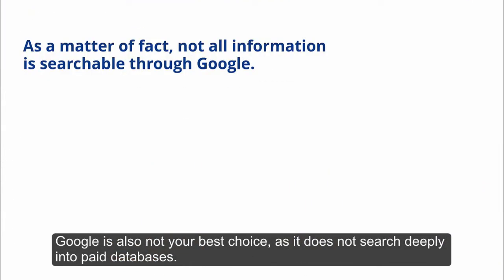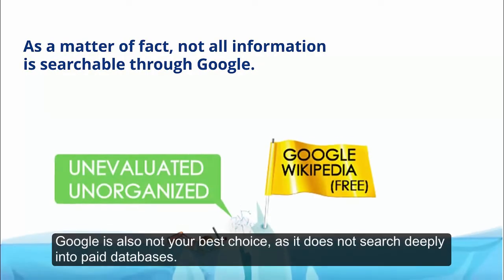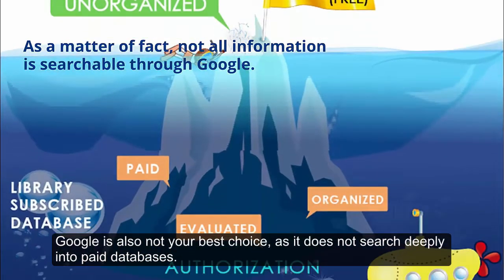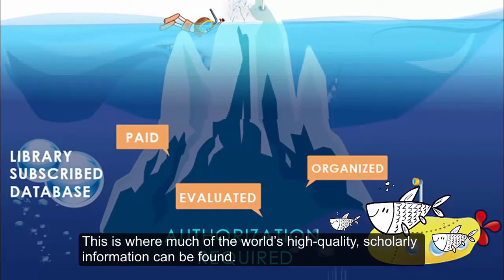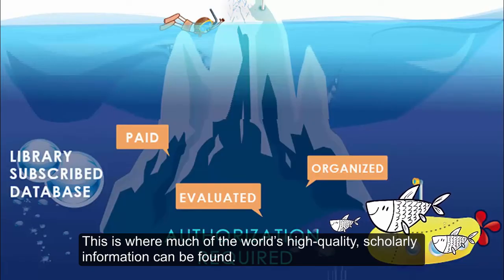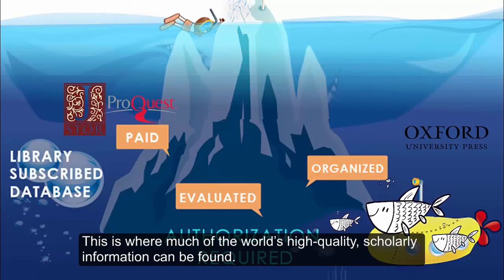Therefore you won't be able to use Wikipedia in your literature review assignment. Google is also not your best choice as it does not search deeply into paid databases. This is where much of the world's high quality scholarly information can be found.